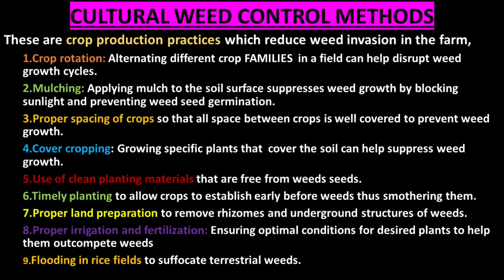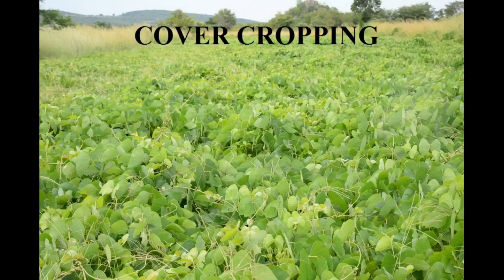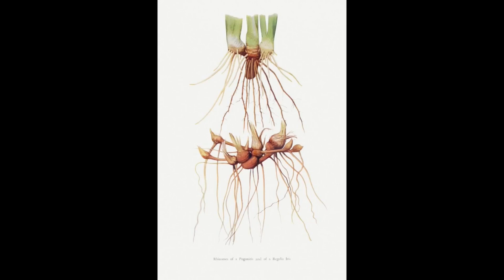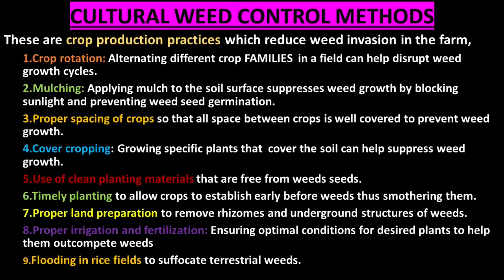Cover cropping involves growing specific plants that cover the soil and help to suppress weed growth. Use of clean planting materials ensures that planting materials free from weed seeds are planted, ensuring no weeds in the farm. Timely planting allows crops to establish early before the weeds, thus smothering them. Proper land preparation removes rhizomes and underground structures of weeds, thus controlling them. Proper irrigation and fertilization ensures optimal growth of desired plants to help them outcompete weeds.